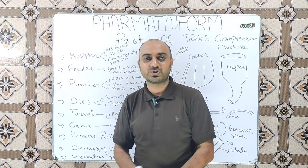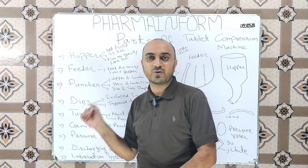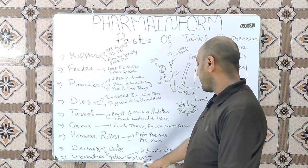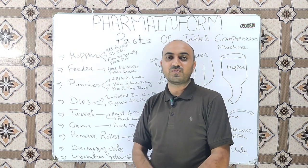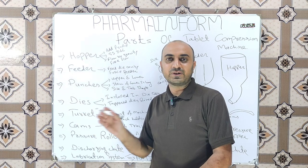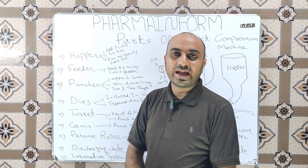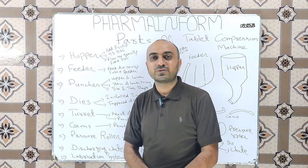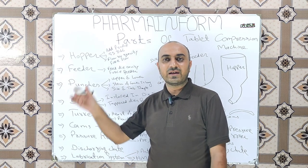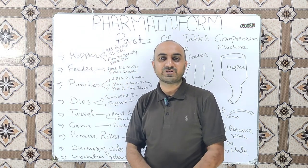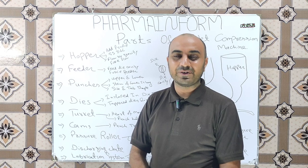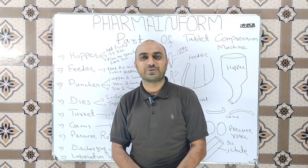In advanced types of compression machines, an auto lubrication system is installed. The last component is the HMI — Human Machine Interface. It is basically a display touch screen from where we add or change various parameters of the compression process. That was all about the parts of the compression machine. If you like the video, share it, subscribe to the channel, and until the next video, Allah Hafiz.